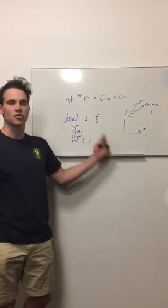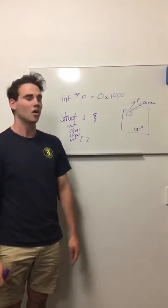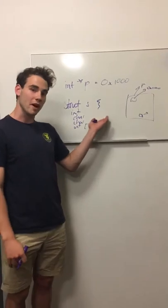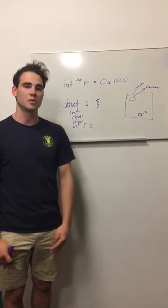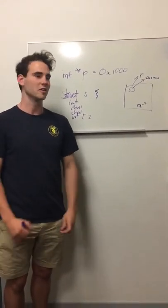we could have a struct that's 32 bytes long. And so when we call a function, if we want to pass the struct in, it's much more efficient to pass a 4 byte pointer than a 32 byte struct.